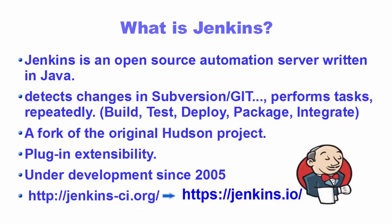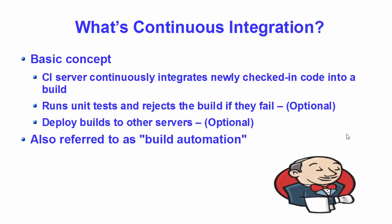You can find more about Jenkins on Jenkins-ci.org, but nowadays this website is transferred to Jenkins.io, so if you enter that URL in your browser it will be redirected to Jenkins.io. Now, before diving deep into Jenkins we need to understand what CI or continuous integration is. The basic concept of CI is that a CI server continuously integrates newly checked-in code into a build. Jenkins detects those changes using the version control system and performs tasks like building, testing, or integration testing on them.